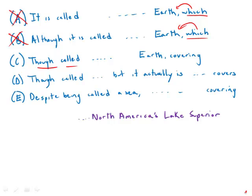D also has that, though called a sea, but then D gets bad after that. Though called a sea, but it is actually the largest lake on earth. This is a very awkward construction.